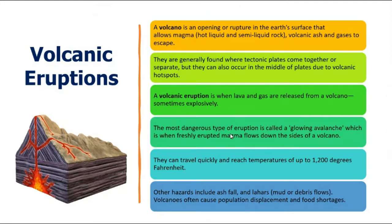Magma comes out from ruptures or points where tectonic plates meet, but volcanoes also occur in the middle of plates due to volcanic hotspots — openings where magma comes out. A volcanic eruption is when lava and gases are released from the volcano, sometimes exploding through the process of explosion. The hot lava, called lahar, along with mud flows, dust, ashes, fragmental materials, toxic gases, and smoke come out of these volcanic eruptions.